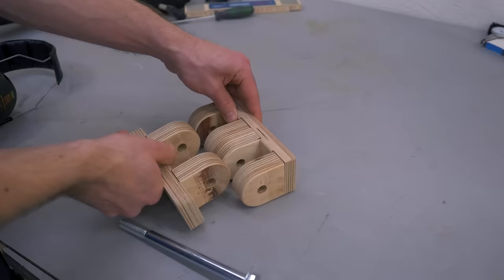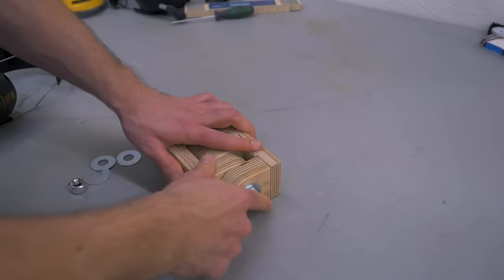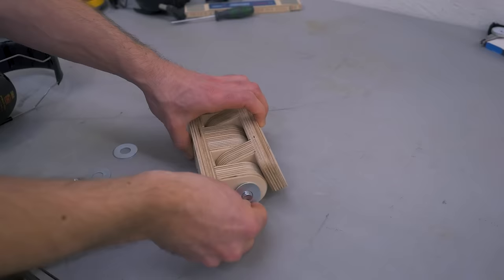These two pieces now get connected with an M12 bolt through the middle. This should align all pieces, and I can screw them tight now. But somehow I screwed up the length because there's not enough thread left for the lock nut. But, easy fix.